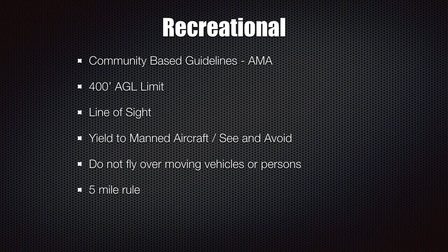The first category of flight is recreational use. Recreational use is specifically for hobbyists — it's just flying for fun. Most of you are not going to be operating recreationally if you're doing fire and emergency services, but you may want to just play and have fun with a drone. You have to follow a community-based set of guidelines like the AMA, or the Academy of Model Aeronautics. You have to stay below 400 feet AGL, which means above the ground. You must fly within line of sight, yield to manned aircraft, use see-and-avoid requirements, and you cannot fly over moving vehicles or persons.